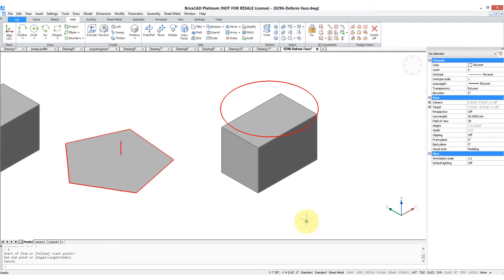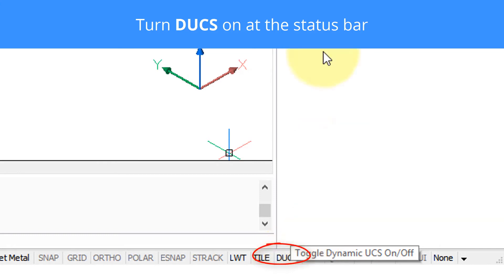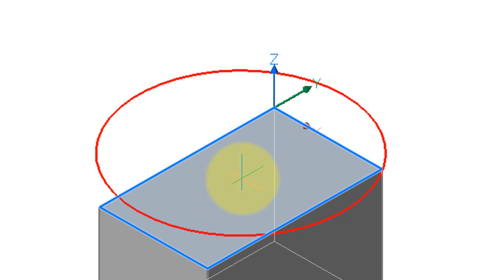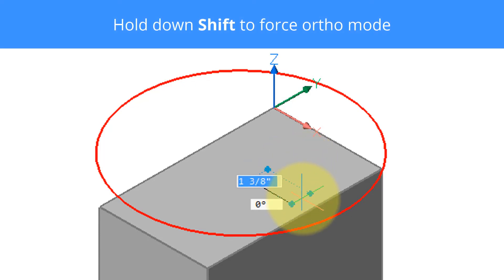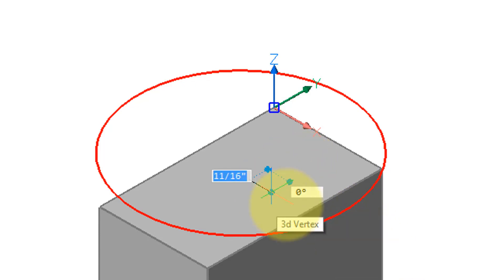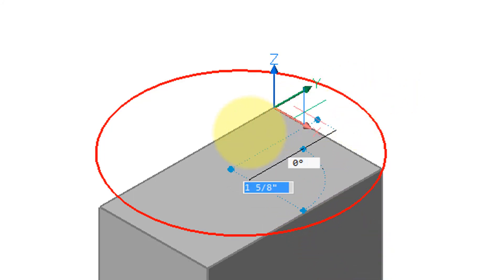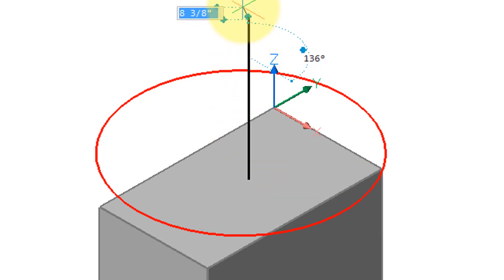To help with the deform point command, I drew a vertical line. First, I made sure dynamic UCS was turned on, then started the line command and moved the cursor on top of the face. Notice the face is highlighted and the UCS is automatically aligned to it. I clicked roughly in the middle, then moved the mouse while holding down the Shift key, which forces the line to be orthogonal. Moving the mouse in one direction draws the line in the X direction, another way gives the Y direction, and moving it up draws in the Z direction. Click to place the other end of the line and press Enter to end the command.